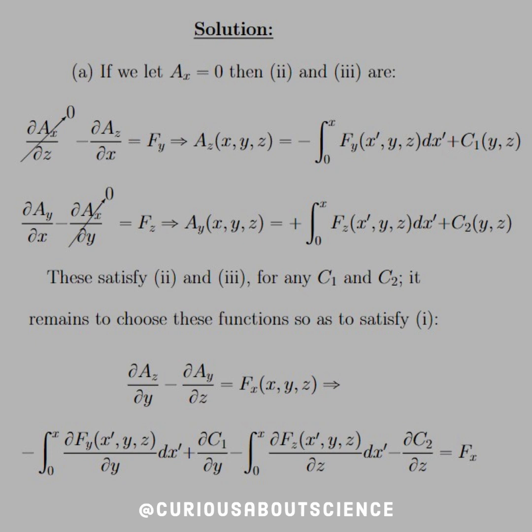Same thing for Ay. We know that these satisfy equations two and three. It would remain to find these functions so that it satisfies equation one. If we recall, equation one was partial y of Az minus partial z of Ay equals the field component, the x field component. So if we plug the Az and Ay in terms of their integrals into this equation one, here's what we get.